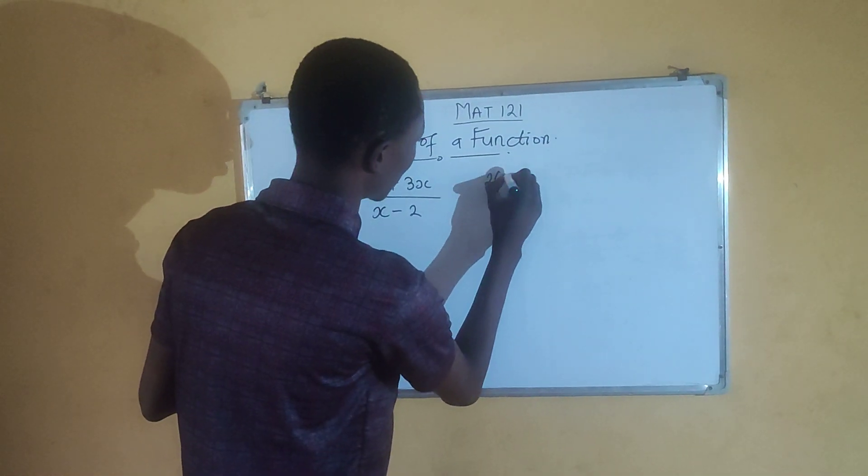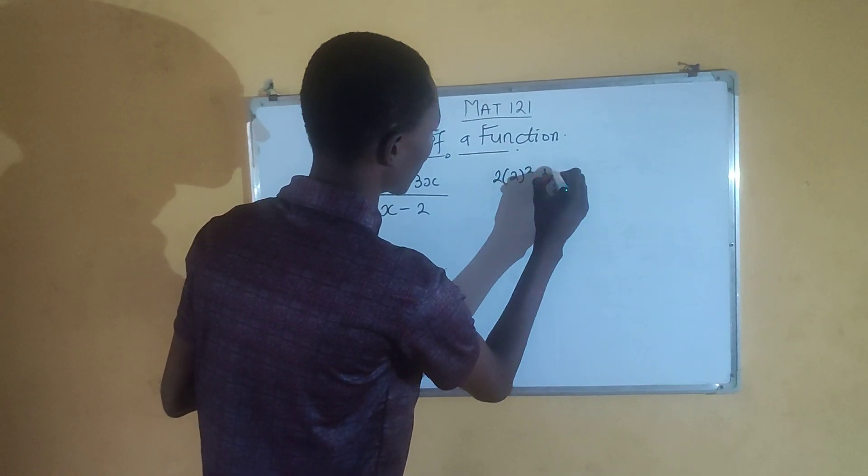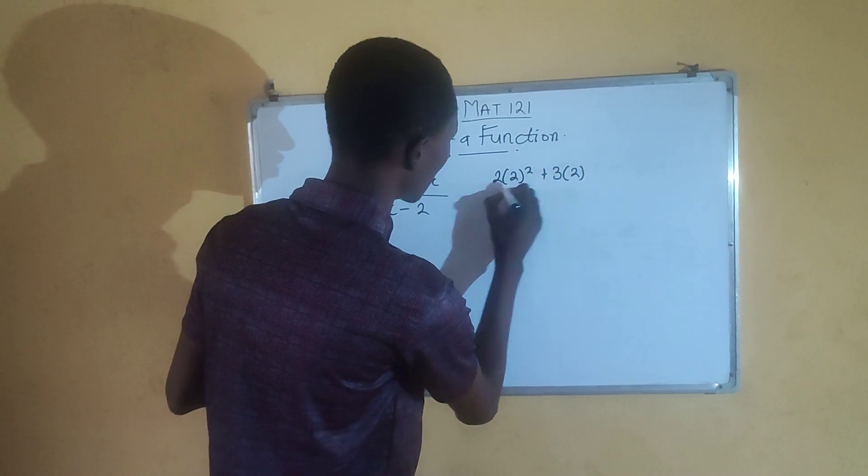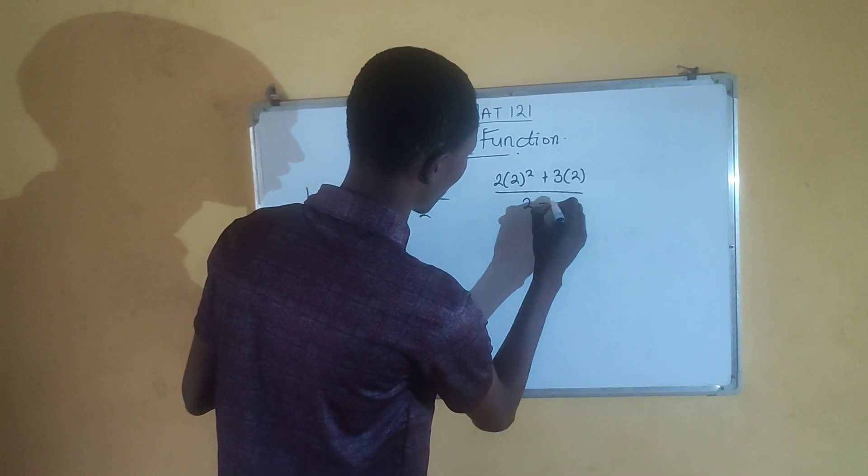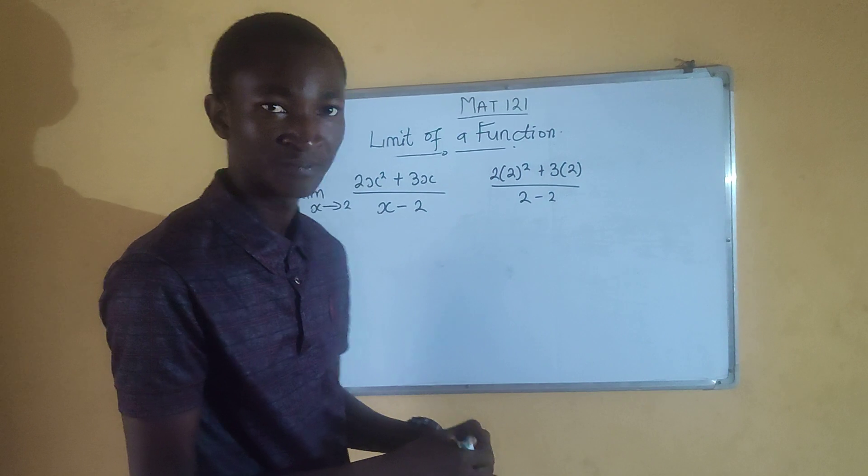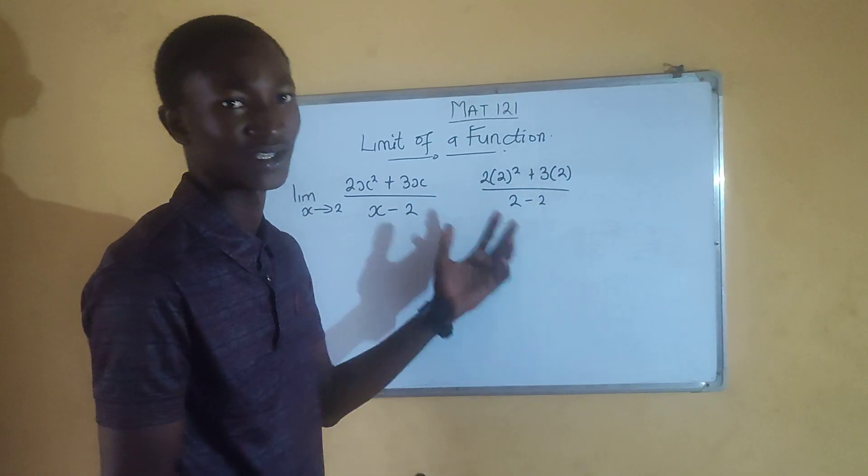it gives you zero at the denominator. Like what I'm saying is 2 into bracket of 2 squared plus 3 into bracket of 2. So when you put 2 here, you have 2 minus 2. This equals to zero. So when you have this, you cannot get the limit.